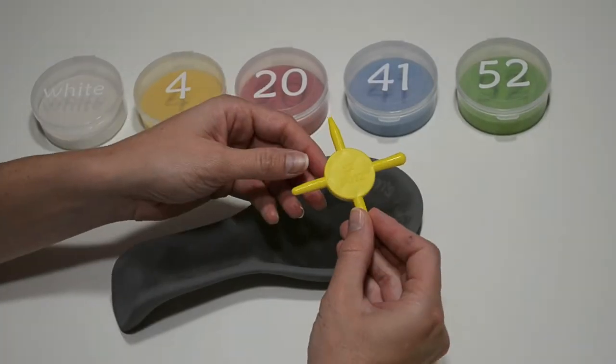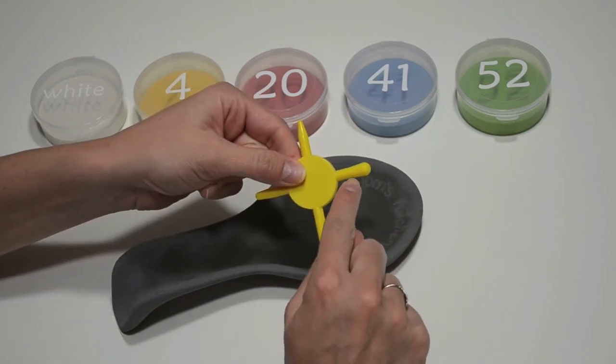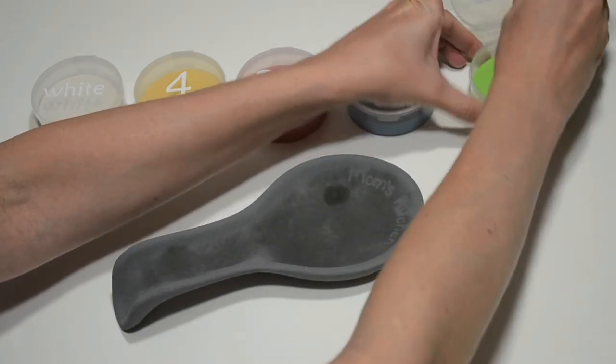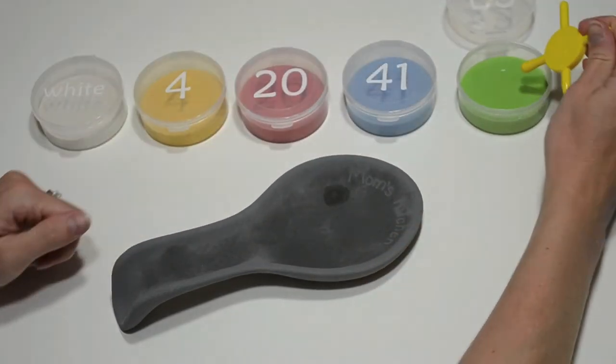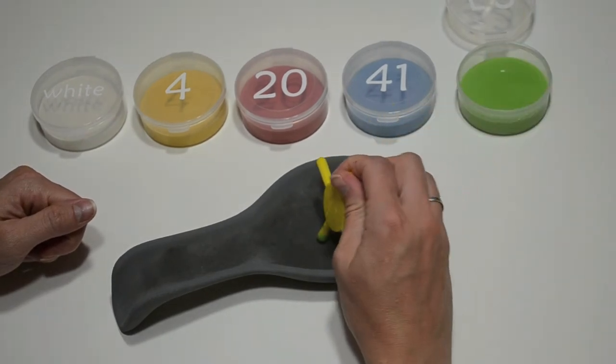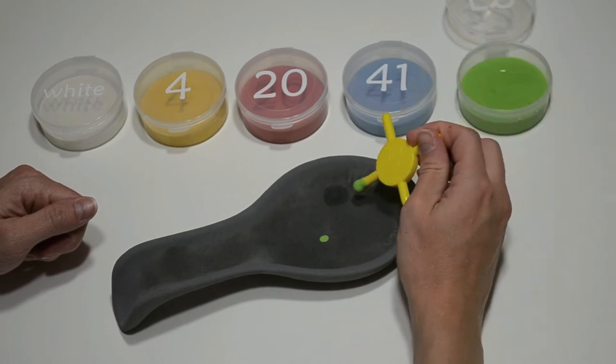Now let's add some dots. We have dot makers that make adding dots of all sizes a snap. On this spoon rest, we're going to add multiple layers of dots. Don't worry, it's easy. For the base layer, start by adding large dots. Simply dip the dot maker into the paint and then onto the piece for each dot.